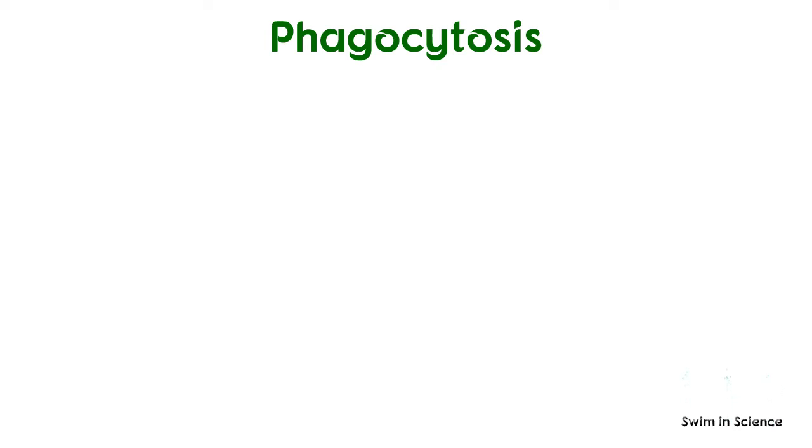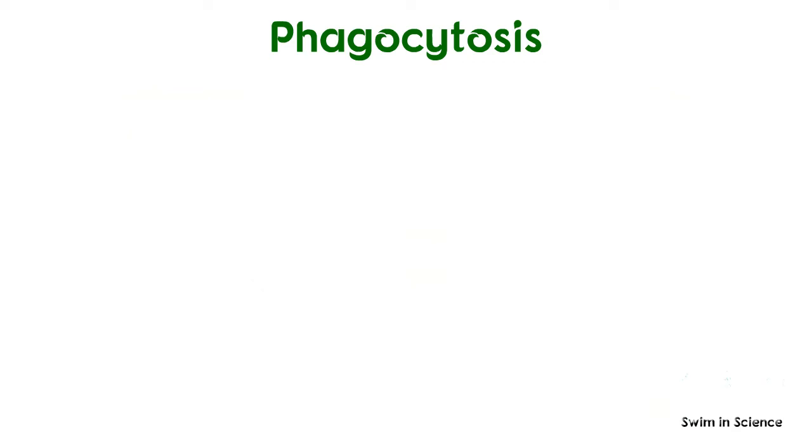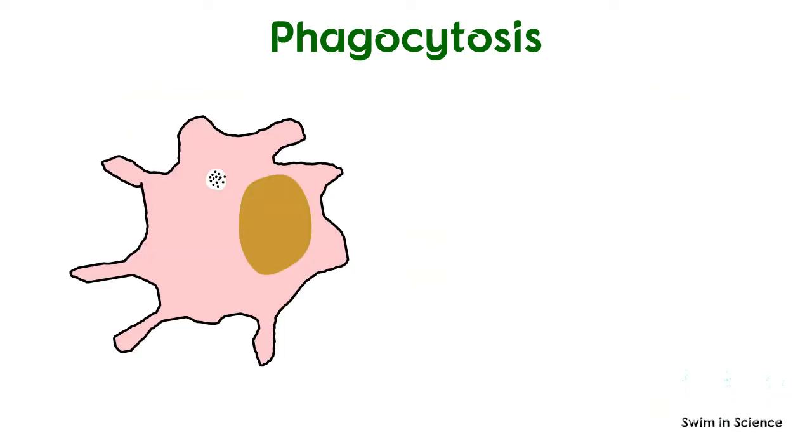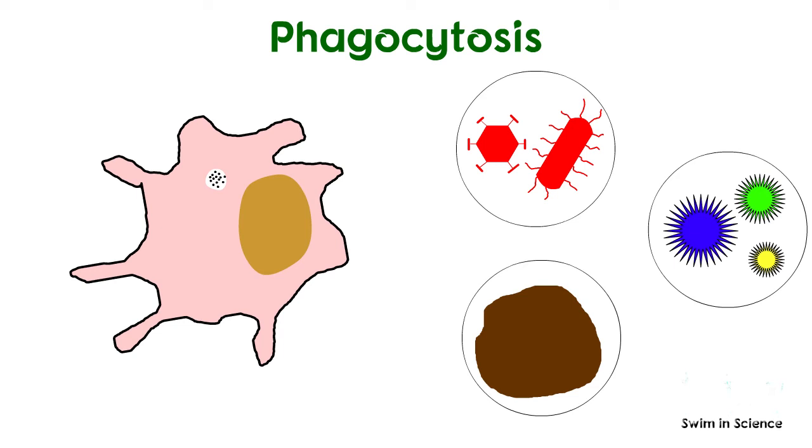Phagocytosis is a process by which a cell engulfs and eliminates large particles. In our body, macrophages are capable of ingesting and digesting exogenous antigens, such as whole microorganisms, foreign antigens as well as injured or dead host cells.